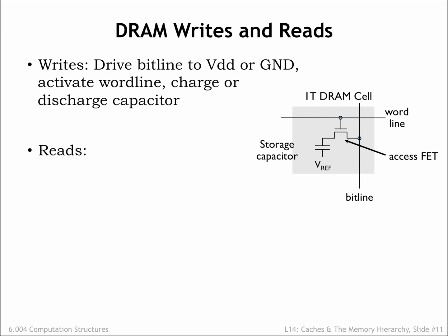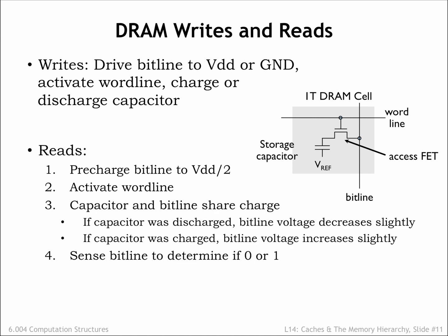Reads are a bit more complicated. First, the bit line is pre-charged to some intermediate voltage — for example, VDD over 2 — and then the pre-charge circuitry is disconnected. The word line is activated, connecting the storage capacitor of the selected cell to the bit line, causing the charge on the capacitor to be shared with the charge stored by the capacitance of the bit line.